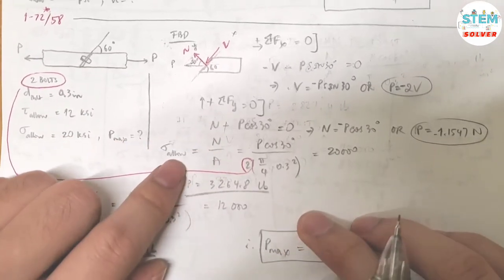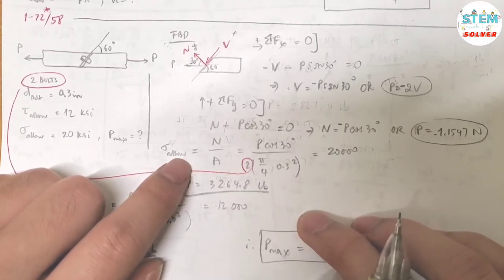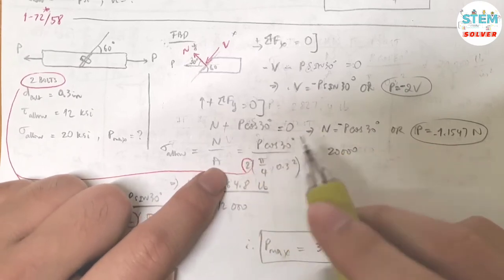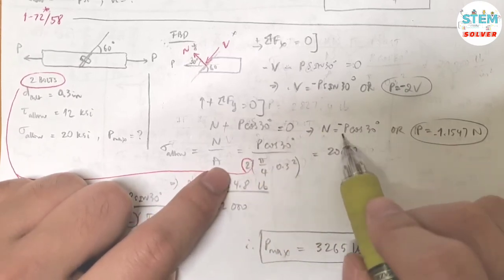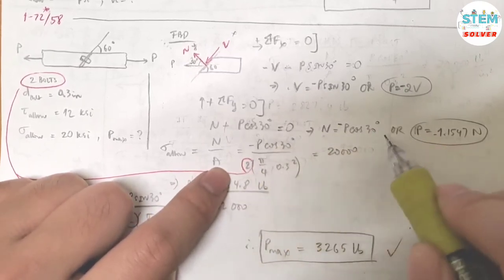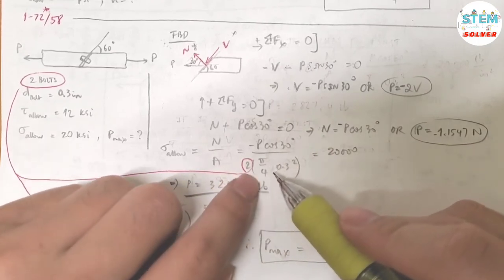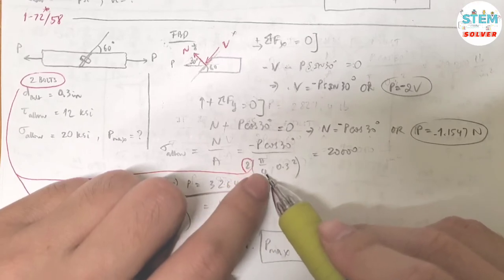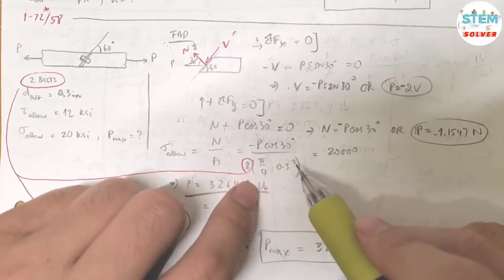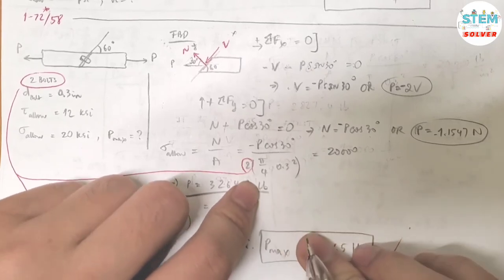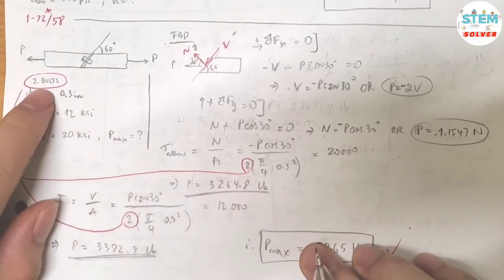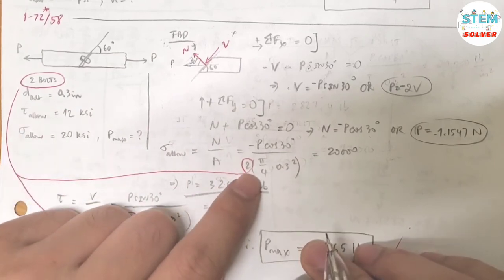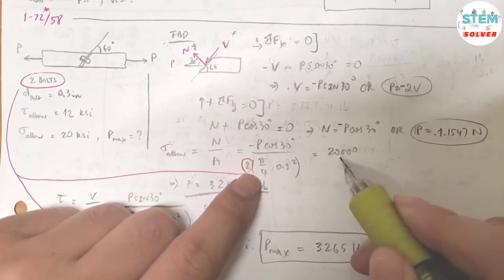Alright, so you're told that the allowable normal stress is 20 ksi. So I have normal stress equals normal force divided by area. Normal force is negative P over cosine 30 divided by the area, which is pi over 4 times 0.3 squared. And remember that I told you earlier to keep in mind that you have 2 bolts. That's why I multiplied by 2 here for the area. Set that equal to 20,000.